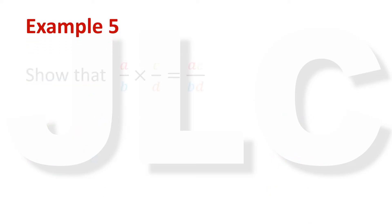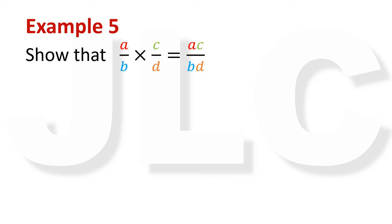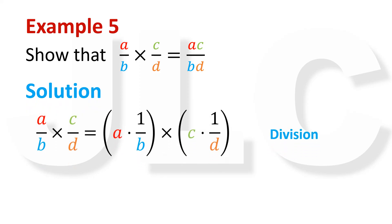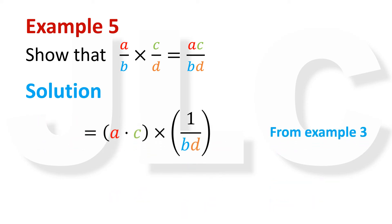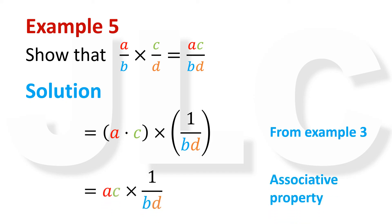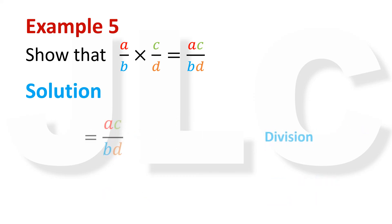Example 5: Show that A over B times C over D equals AC over BD. From our definition of division, A over B is A times 1 over B, and C over D is C times 1 over D. We can write this as the product of A and C times the product of 1 over B and 1 over D. From the previous example, 1 over B times 1 over D equals 1 over BD. Rearranging by associativity, we have AC times 1 over BD, which from the definition of division simplifies to AC over BD.